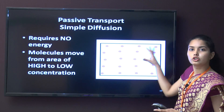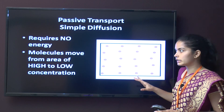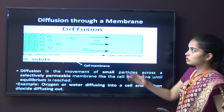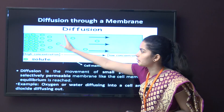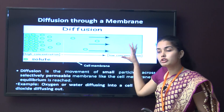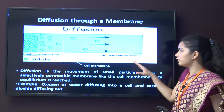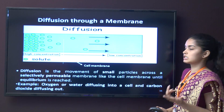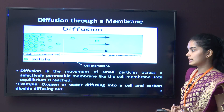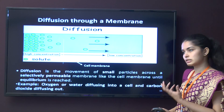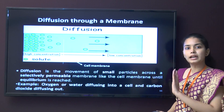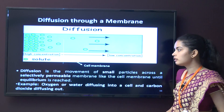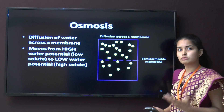Simple diffusion requires no energy. Molecules move from an area of high concentration towards an area of low concentration to maintain equilibrium. Diffusion occurs through the semi-permeable membrane, where molecules diffuse from high to low concentration. Diffusion is the movement of small particles across the selectively permeable plasma membrane to maintain equilibrium — mainly involving oxygen and water.